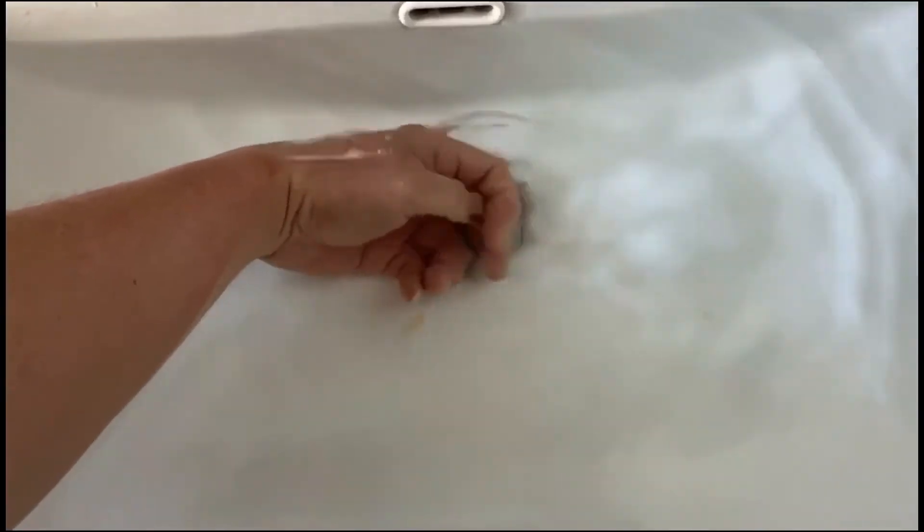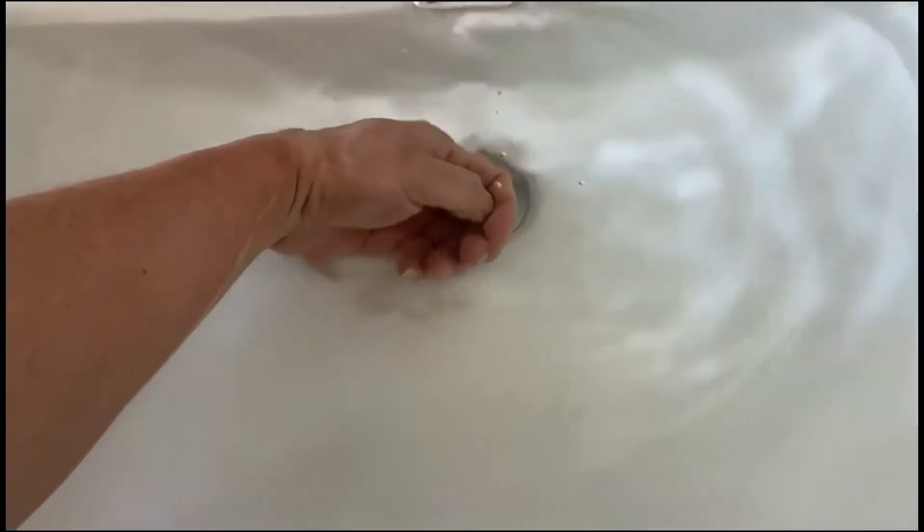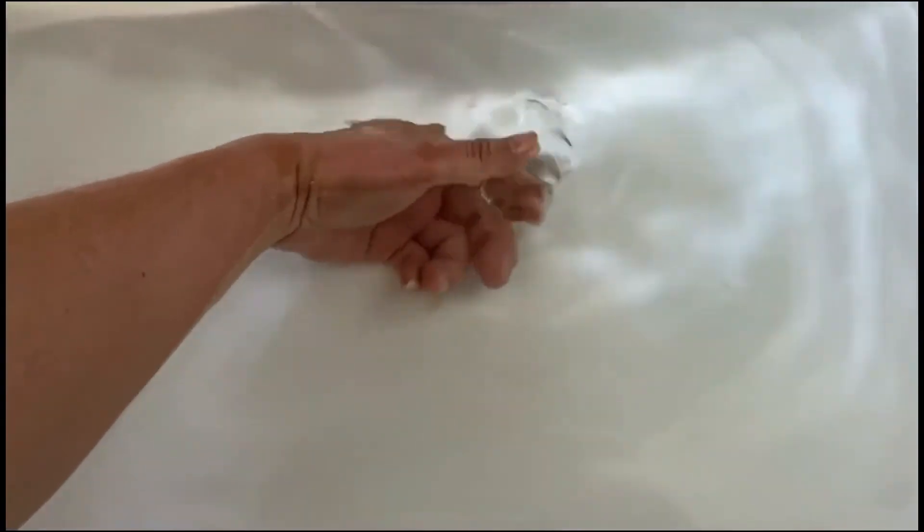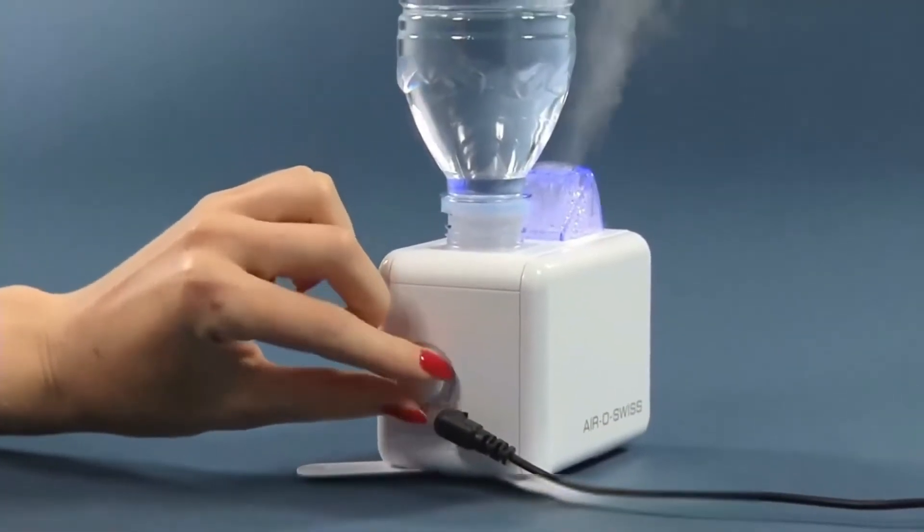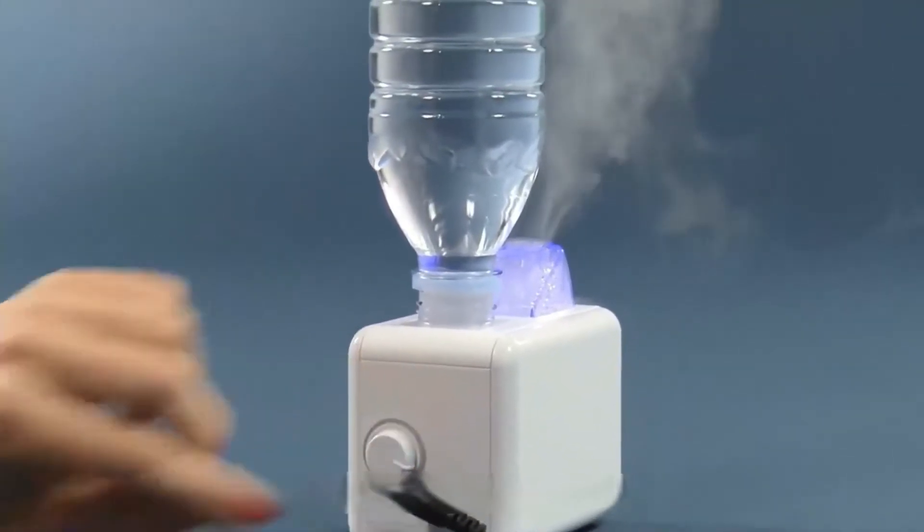It's like flicking your finger in the water and the water will turn up. The difference is that the finger twice a second, so it's a big splash. The atomizer 1.7 million times a second. This speed can be imagined how fine the water is. So it's a mist.